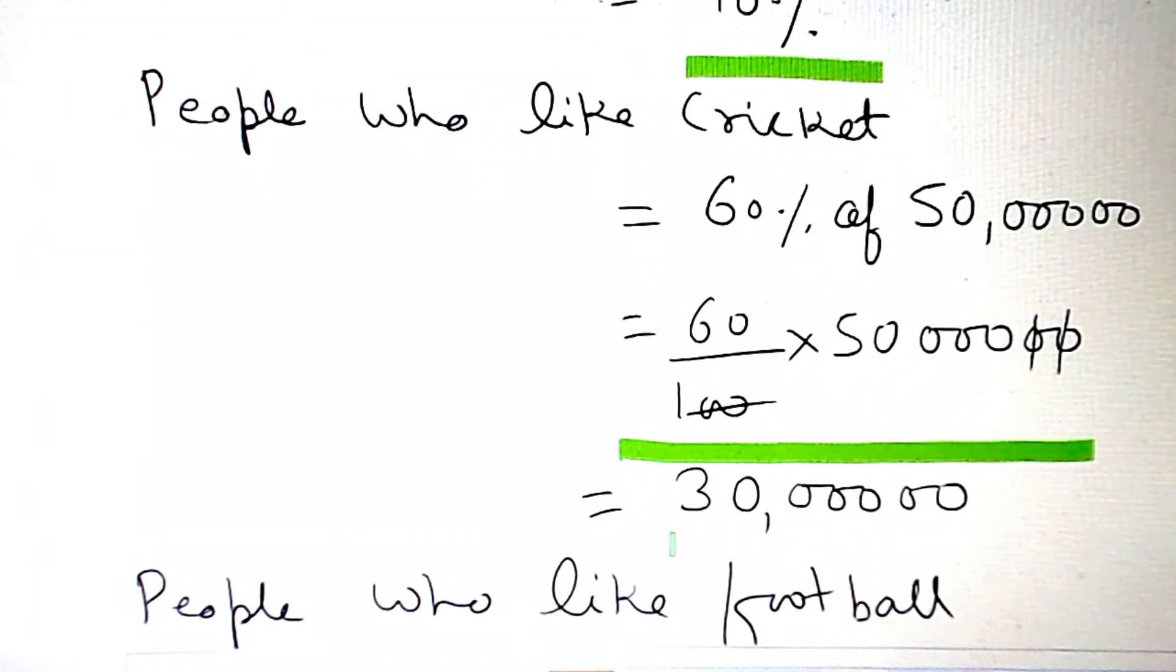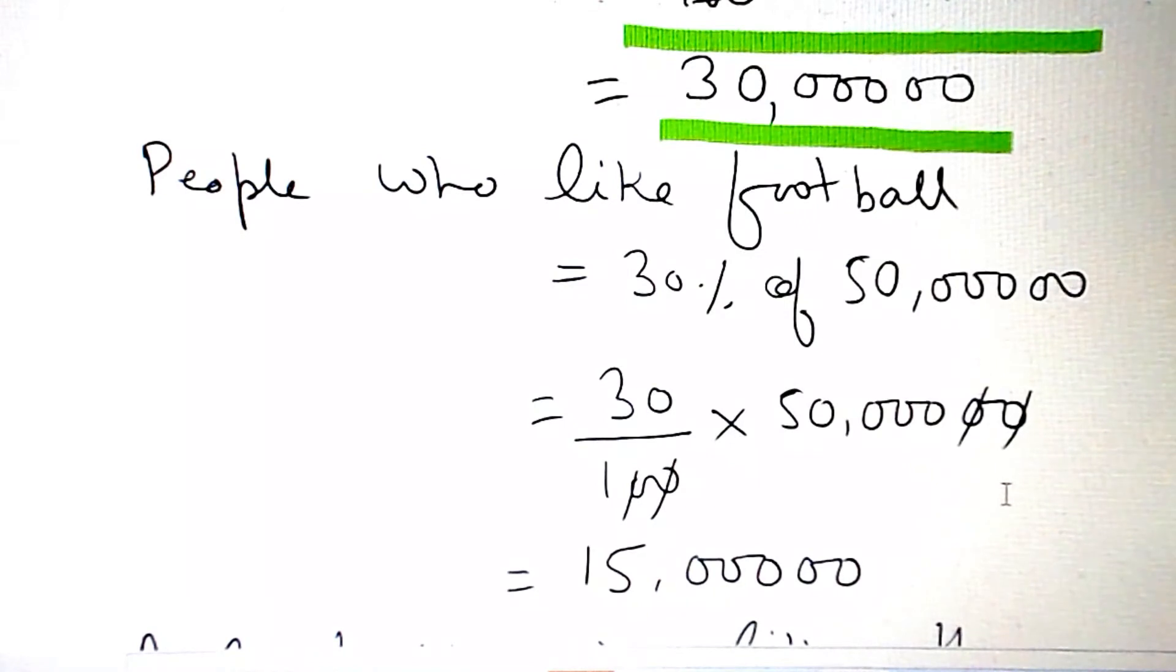This gives us 30 lakh. People who like football equals 30% of 50 lakh. Two zeros cancel, and multiplying gives us 15 lakh.